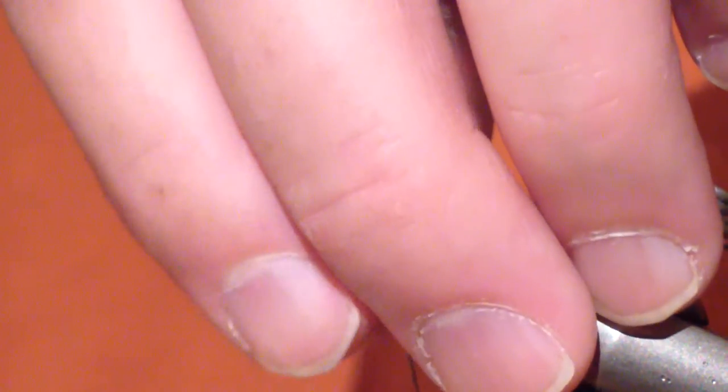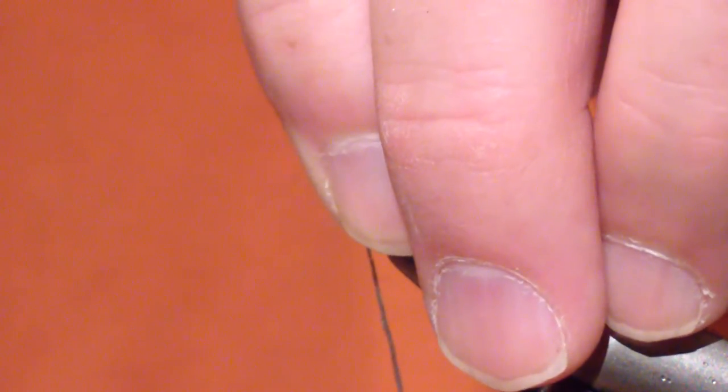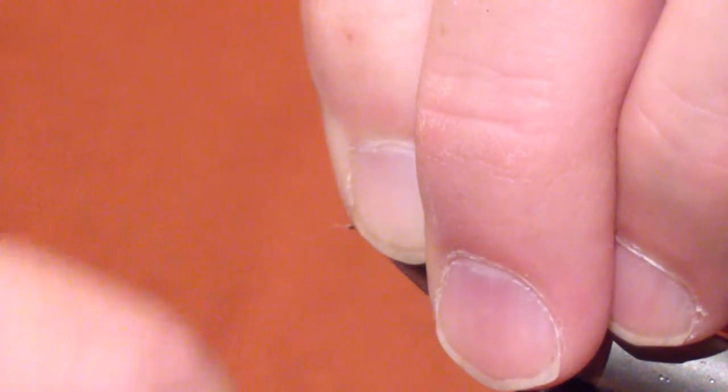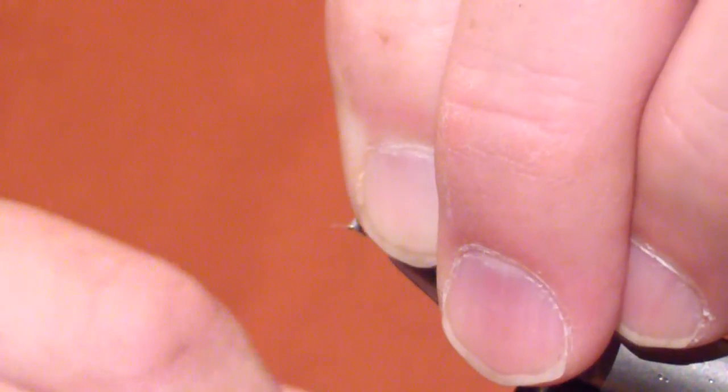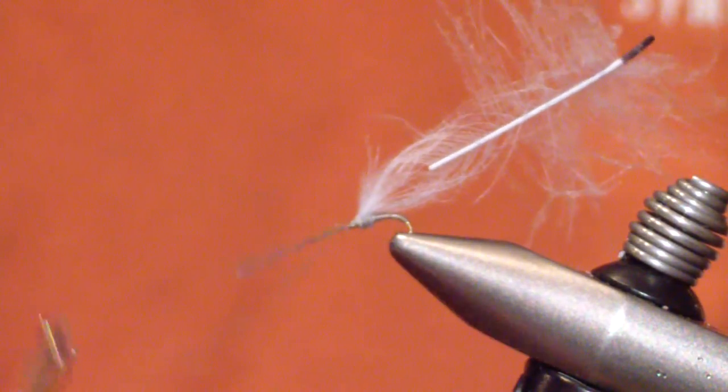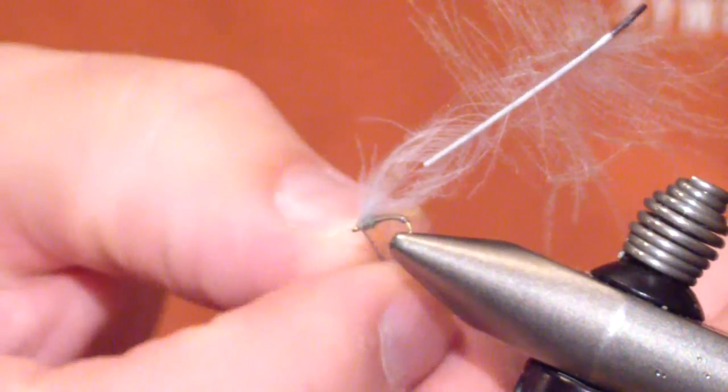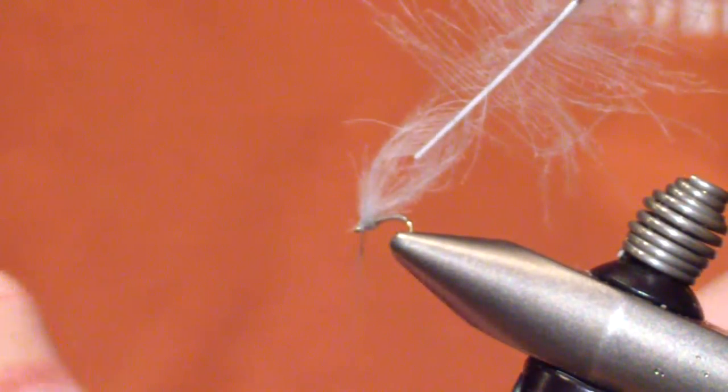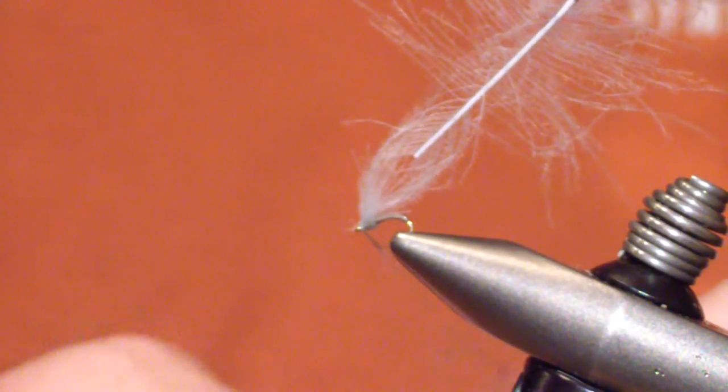And then you're going to sweep everything back. And put just one or two wraps right behind. I got a little too much dubbing on there, so we'll pull that off.